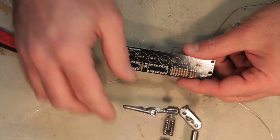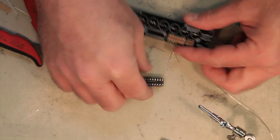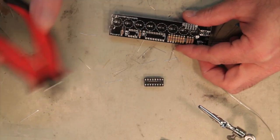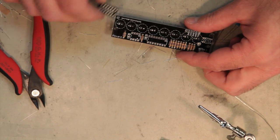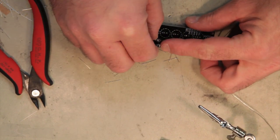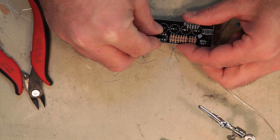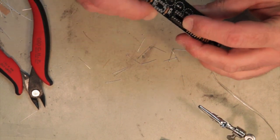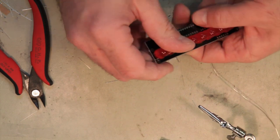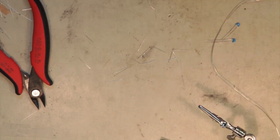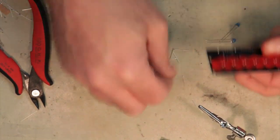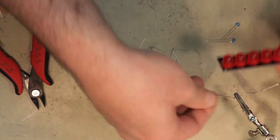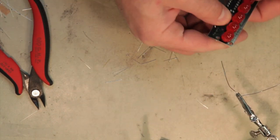Resistors are on, I'm now going to install the sockets. Notice how there's a little notch on the socket, that notch is going to match up with the notch on your PCB. Use the helping hands again, will hold my solder for me while I get my socket started.